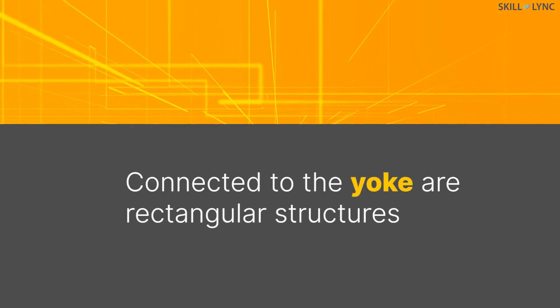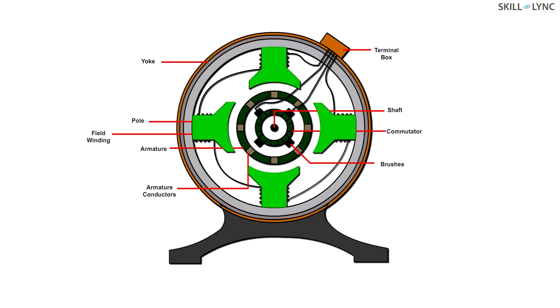Connected to the yoke are rectangular structures called the poles. The field windings are wound on the pole core and it provides its magnetic flux. The pole core distributes this magnetic flux uniformly in the air gaps. This forms an electromagnet which gives a magnetic field in the generator.